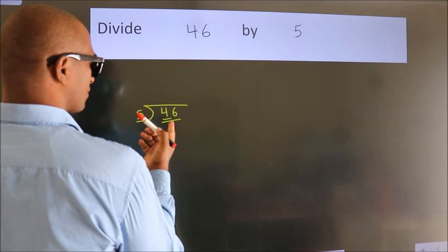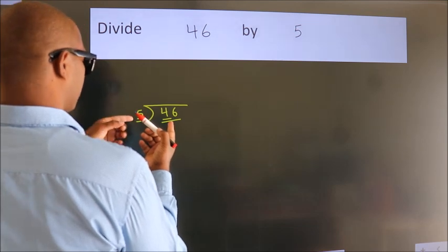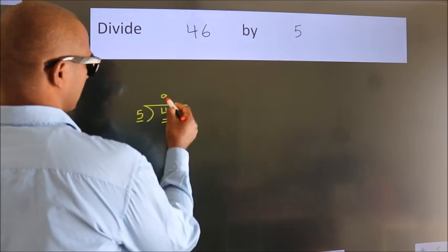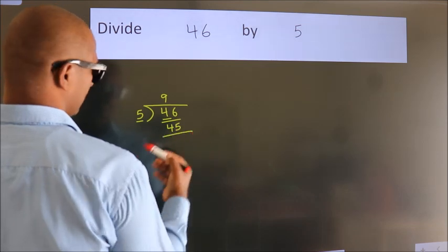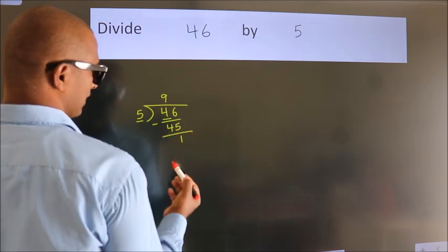A number close to 46 in the 5 times table is 5 nines, which is 45. Now, we should subtract. We get 1.